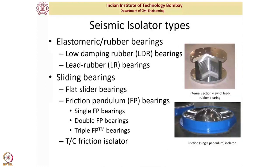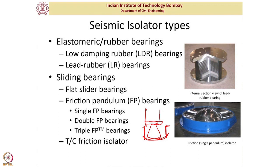Rocker bearings have a curved surface and a column that rocks over it, reducing horizontal force transfer. However, for seismic isolation applications, sliding bearings are preferred because they are more stable and provide larger load capacity. Bridge rocker bearings and neoprene pads used in bridges are not seismic isolation bearings — they are only for accommodating expansion joints or traffic load deformations, not for large seismic displacement demands.